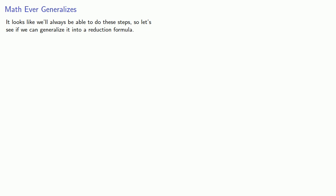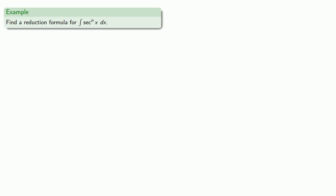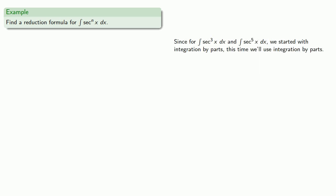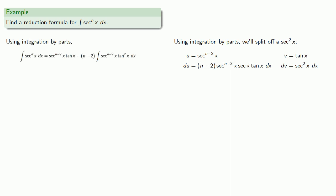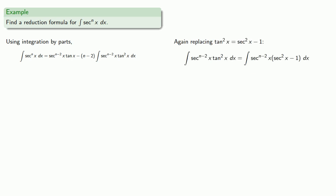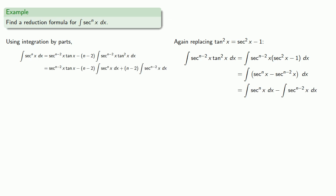It looks like we'll always be able to do this step, so let's see if we can generalize it into a reduction formula. Let's find a reduction formula for the integral of secant to the nth dx. Since for secant cubed and secant to the fifth we started with integration by parts, we'll do the same here — splitting off a factor of secant squared as our dv, with the remaining factors of secant as our u. Integrating and differentiating, applying integration by parts, then replacing the square of tangent with secant squared minus one, expanding, splitting the integral, and doing a little bit of algebra to solve for secant to the nth.